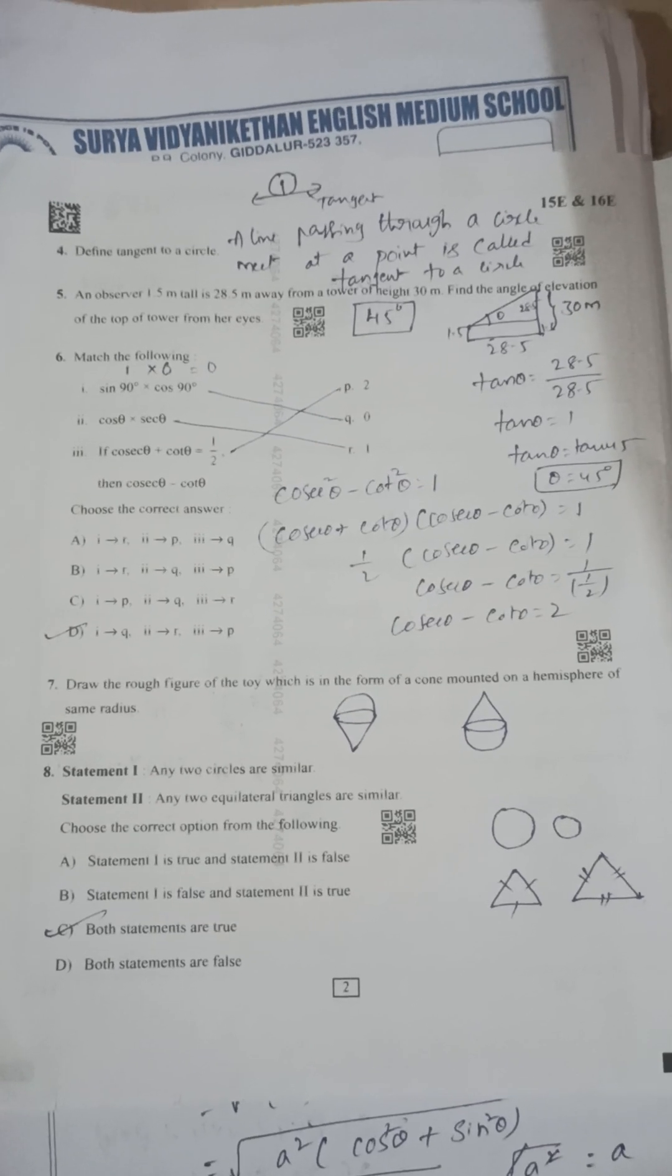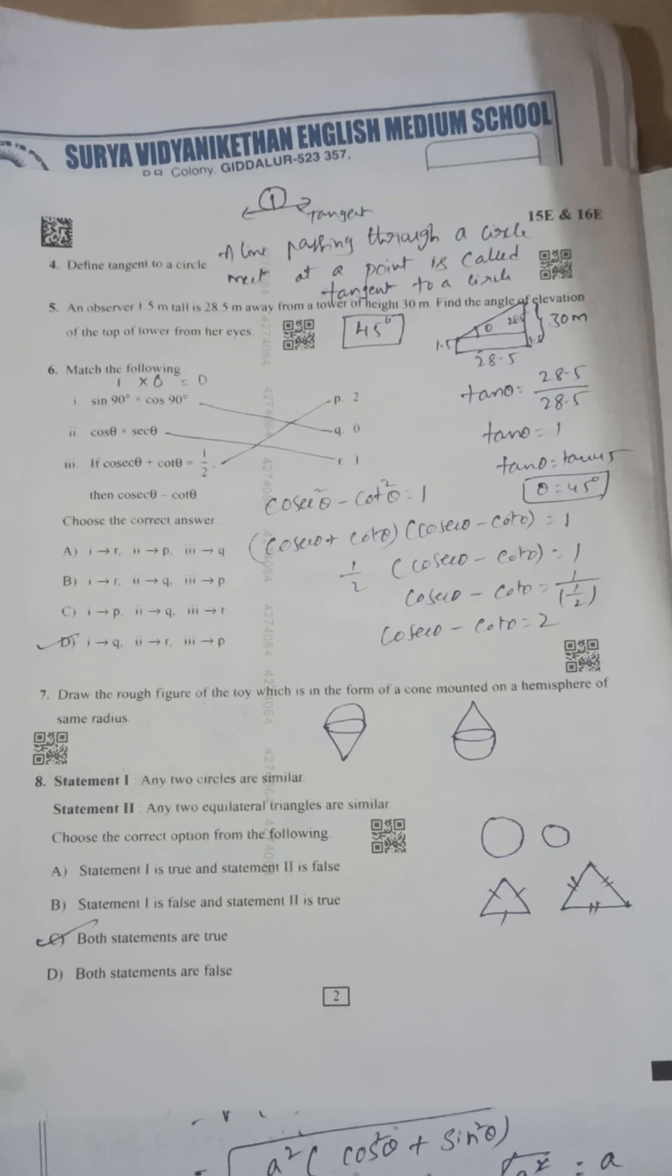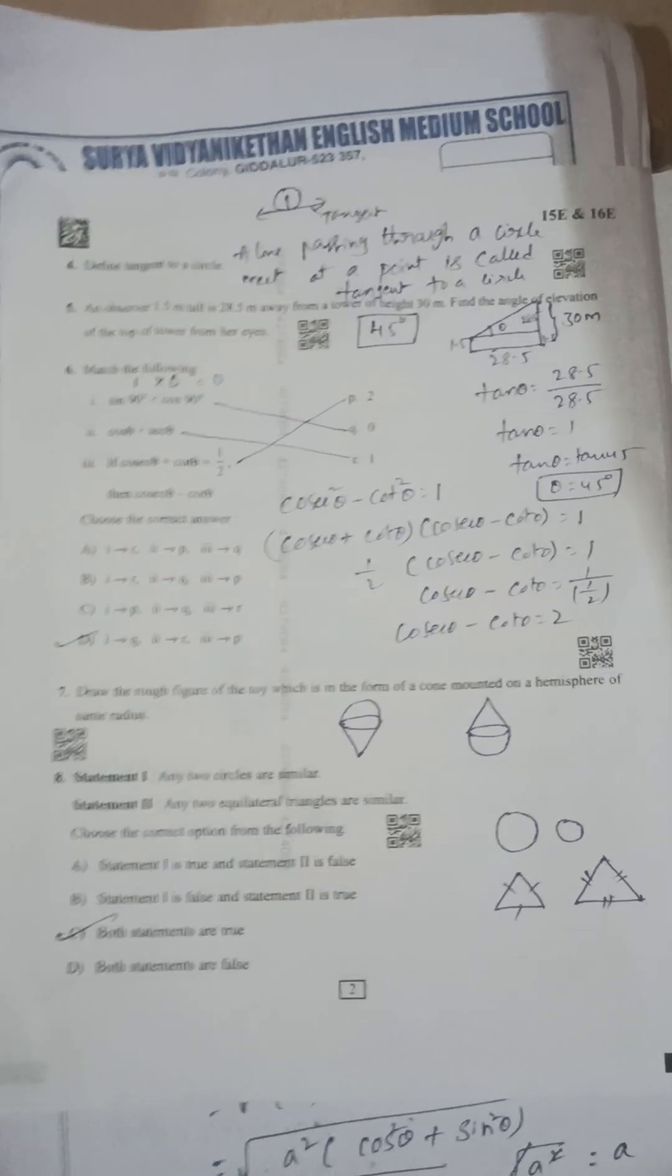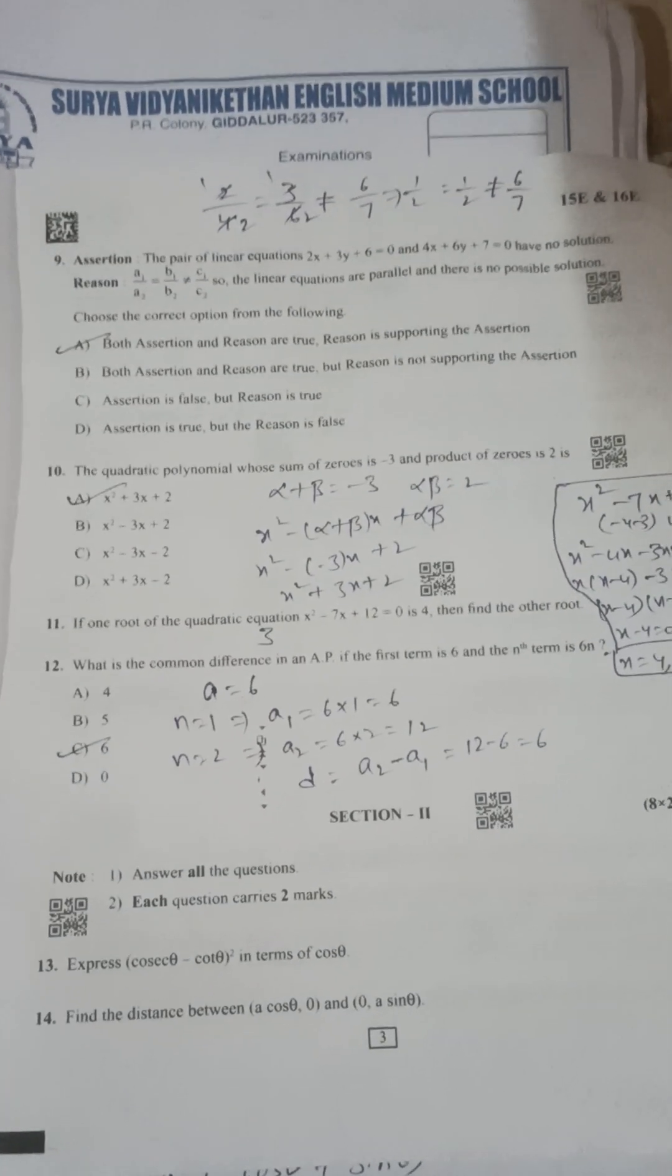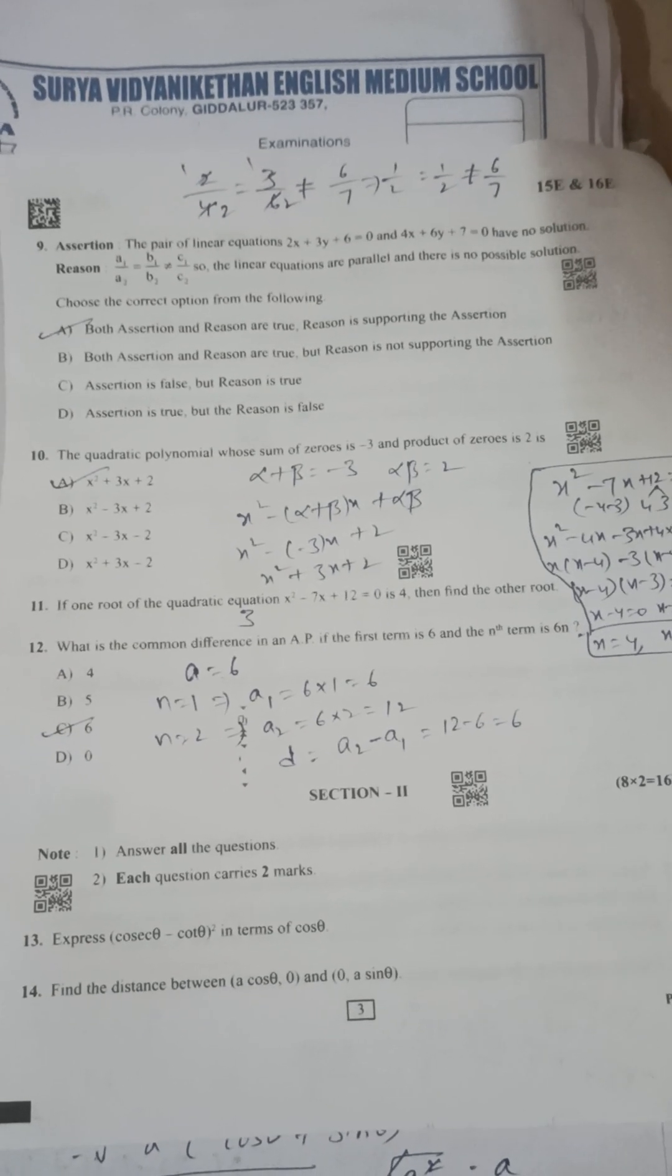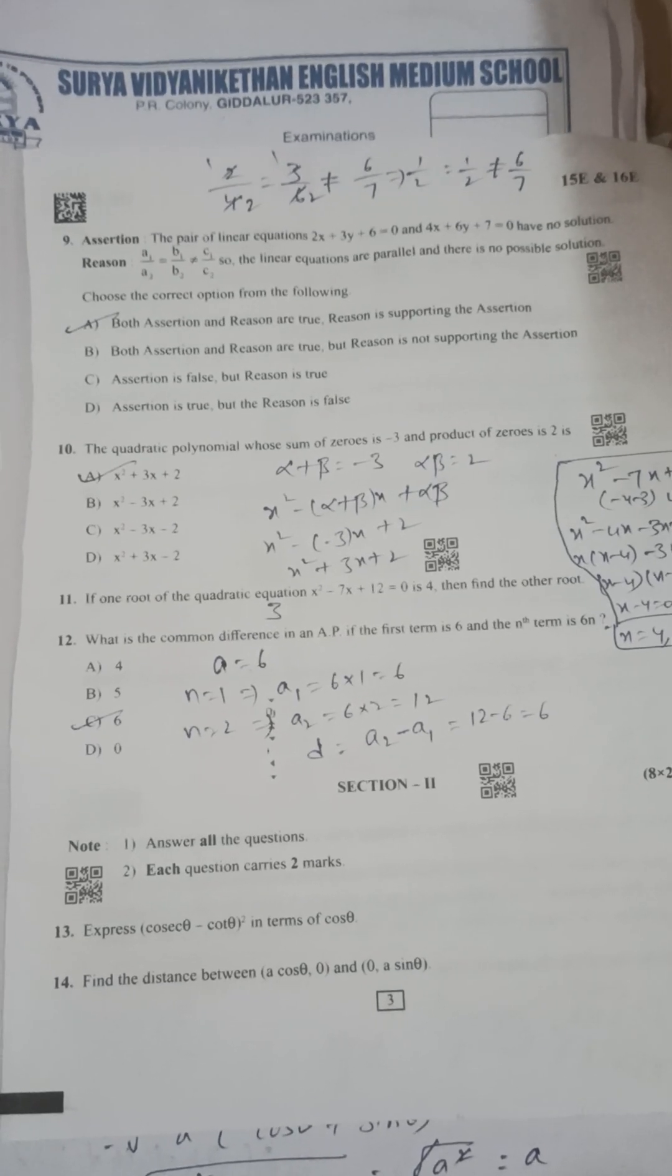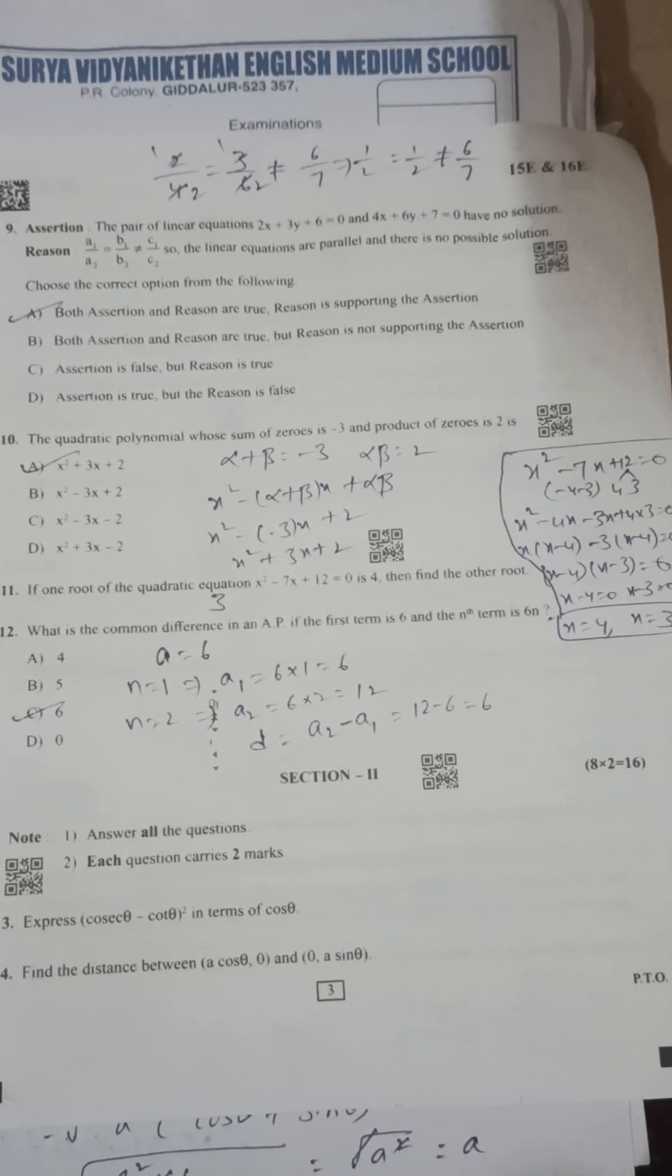Next, 8th one: answer is both statements are true. All circles are similar, any two equal triangles are similar, both are correct. Next, 9th one option is A. Next, the quadratic polynomial whose sum of the zeros is minus 3, product of zeros is 2, that is the first option.